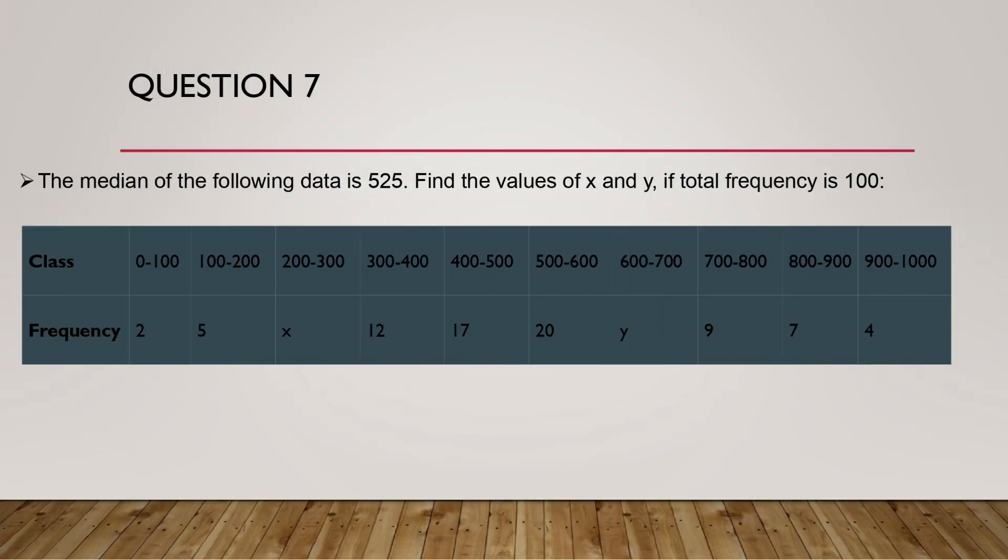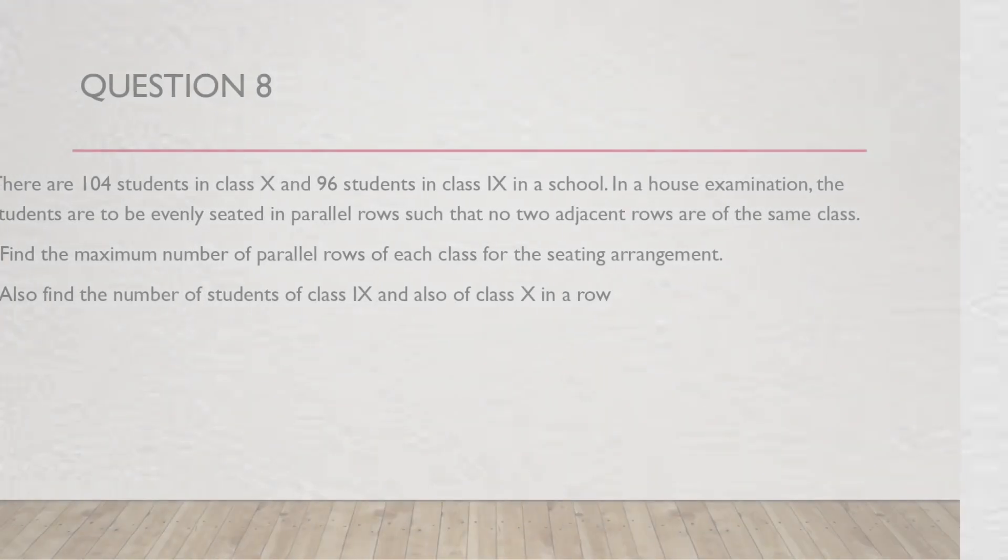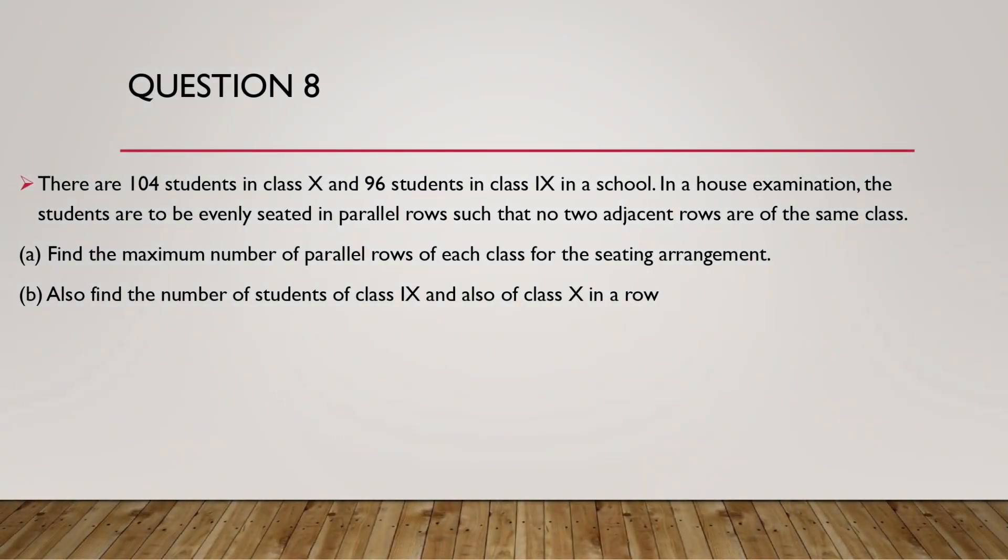Question 7. The median of the following data is 525. Find the value of x and y if total frequency is 100. Question 8. There are 104 students in class 10th and 96 students in class 9th in a school. In an examination hall, the students are to be evenly seated in parallel rows such that no two adjacent rows are of the same class. a) Find the maximum number of parallel rows of each class for seating arrangement. b) Also find the number of students of class 9th and also of class 10th in each row.